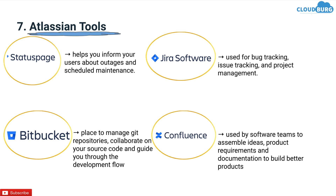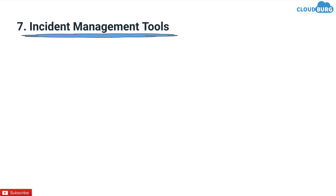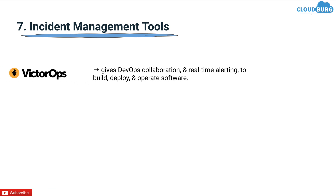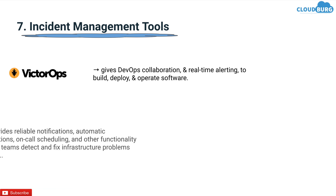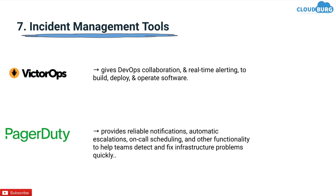Next under the category is incident management tools. Here we have VictorOps, which gives DevOps collaboration and real-time alerting to build, deploy and operate software. PagerDuty provides reliable notification, automatic escalation, on-call scheduling and other functionality to help teams detect and fix infrastructure problems quickly. The top demanding incident management tool is PagerDuty.